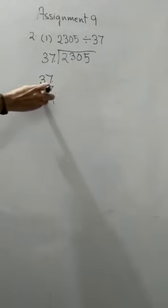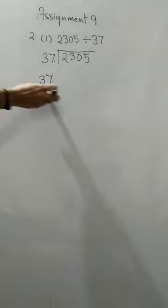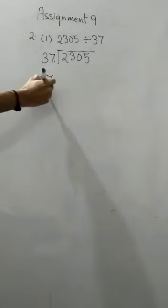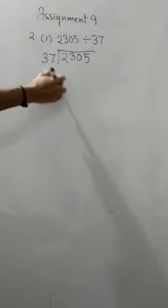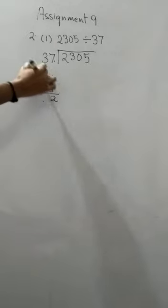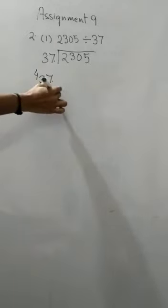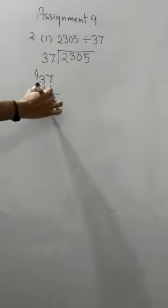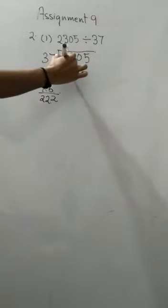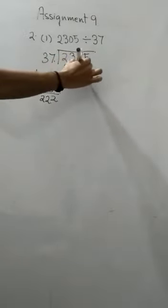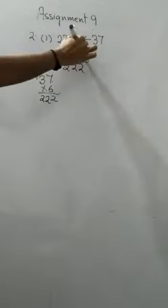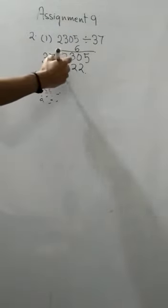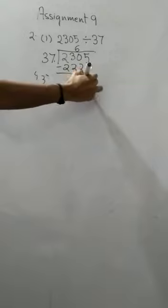No, this we can't do with this. So you will do next, below 1. 37 into 6, you can try. 7, 6 is 42, 4 carry. 3, 6 is 18. 18 plus 4 will give you 22. So here you will write 6. Minus, you get 8, 85.